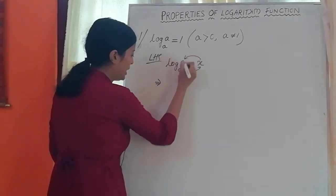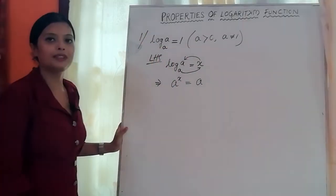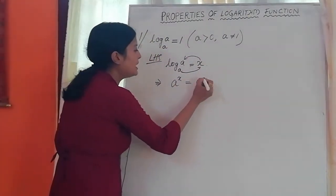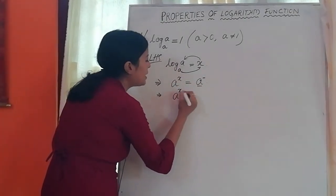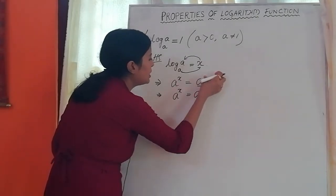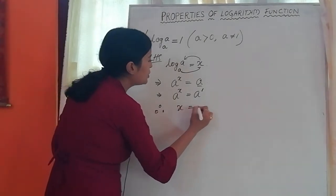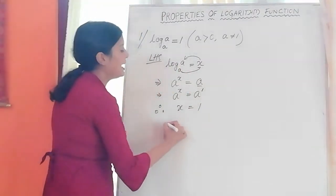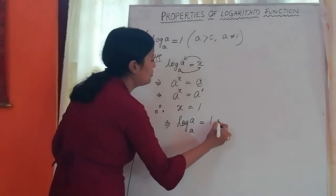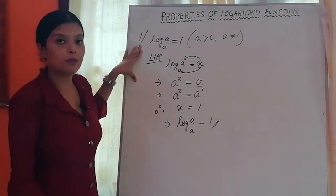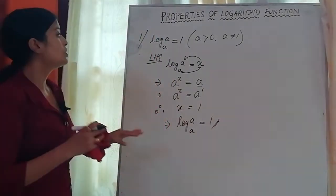In exponential format, a to the power x equals a. Now, a to the power of what equals a? That is a to the power 1. Therefore x equals 1. Since x is log a base a, we get log a base a is equal to 1. Proved. This is easy and very important. This is my second proof — please note it down.